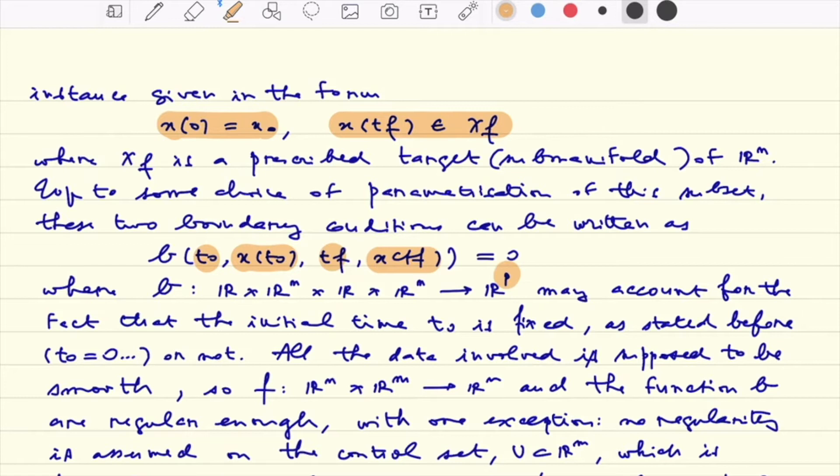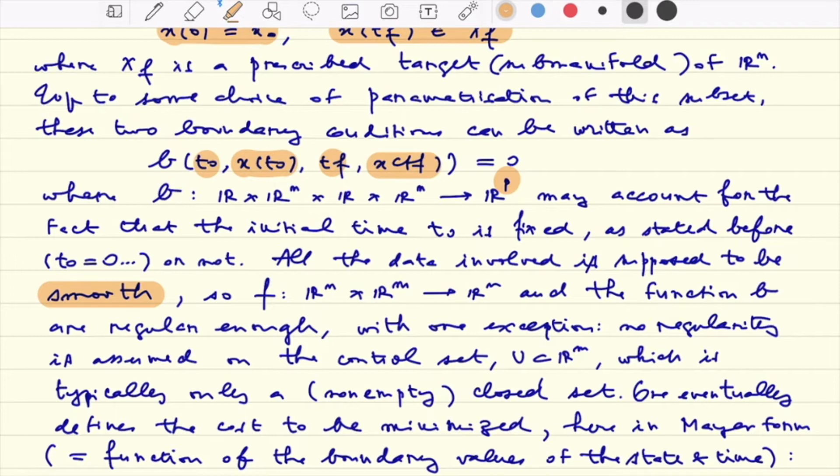So again all the data involved is supposed to be smooth. So function F and function B are smooth functions. By smooth I just mean that we have at our disposal as many derivatives as we want to have.